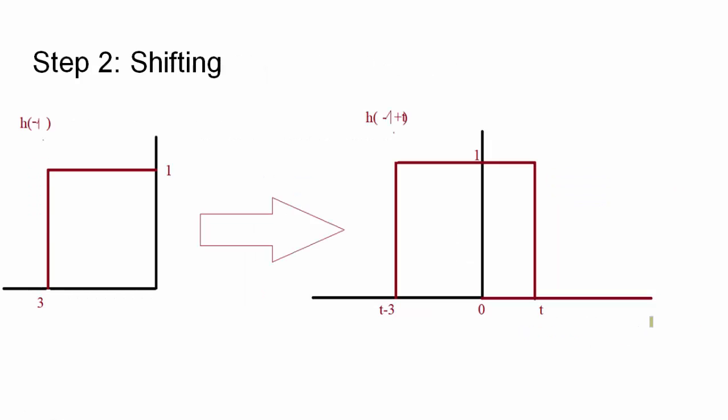Step 2 is the shifting. The output from step 1 is h(−τ). We shift this output by some parameter t, giving h(−τ + t). Shifting is of two types: time advance and time delay. You will see limits like t − 3 and t appear because we have shifted the output by some delay or advance. We are shifting h(−τ) to h(−τ + t), and you can see both representations on the left and right hand sides.